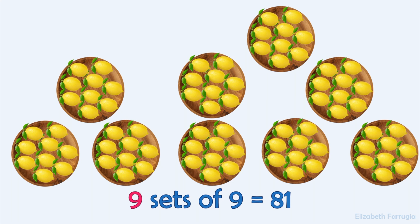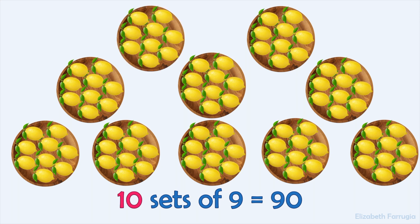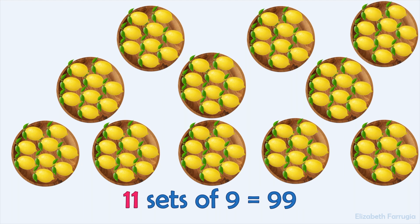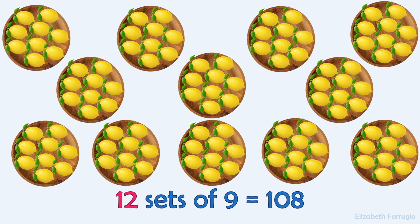9 sets of 9 make 81. 10 sets of 9 make 90. 11 sets of 9 make 99. 12 sets of 9 make 108.